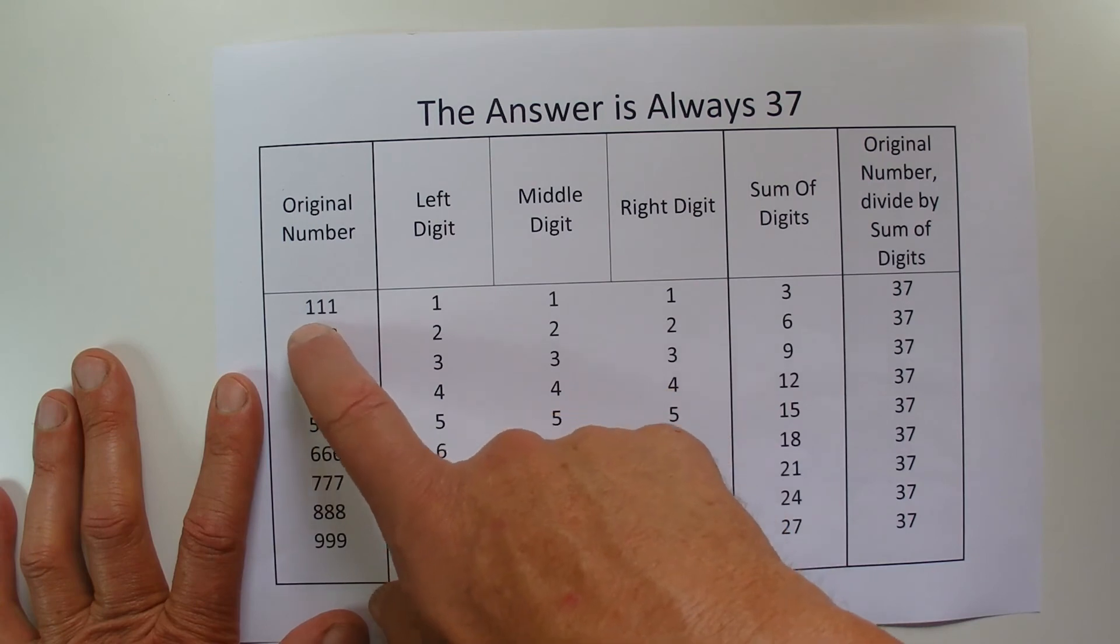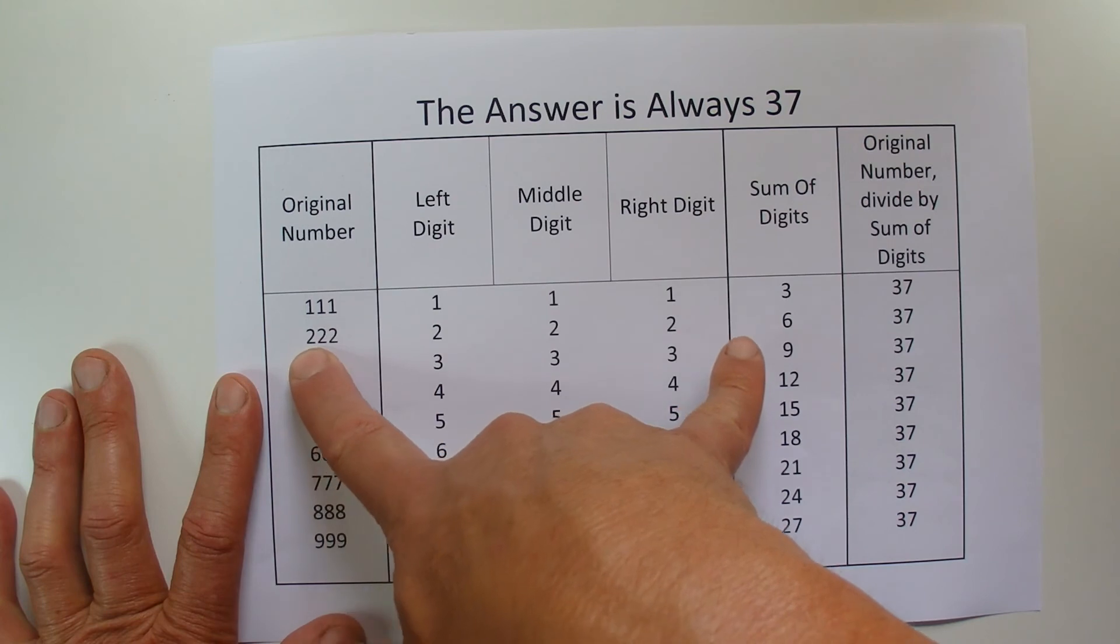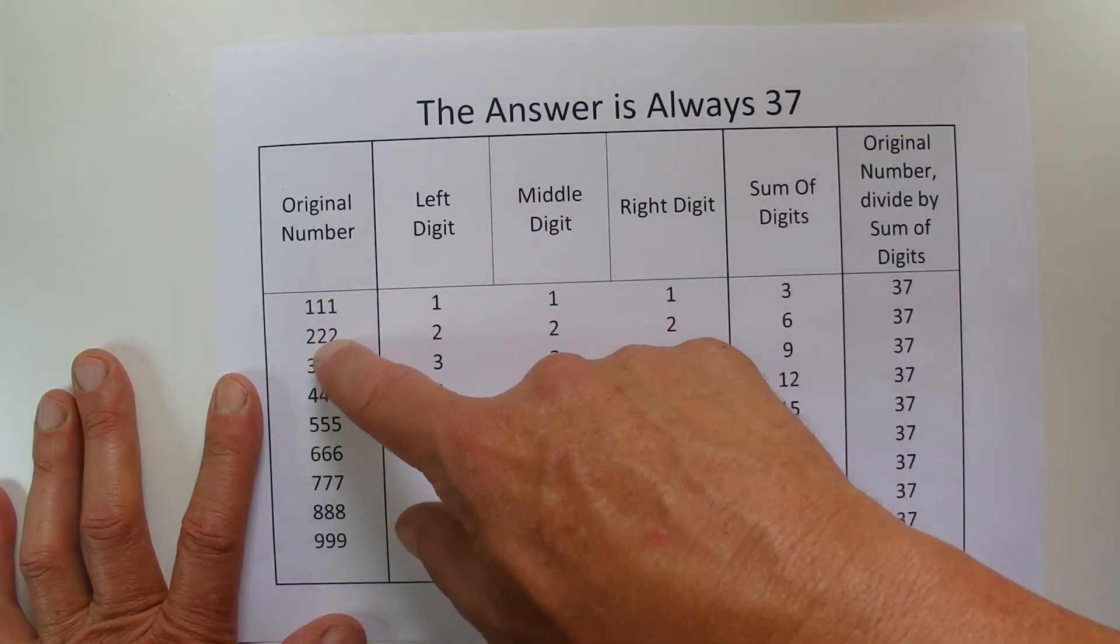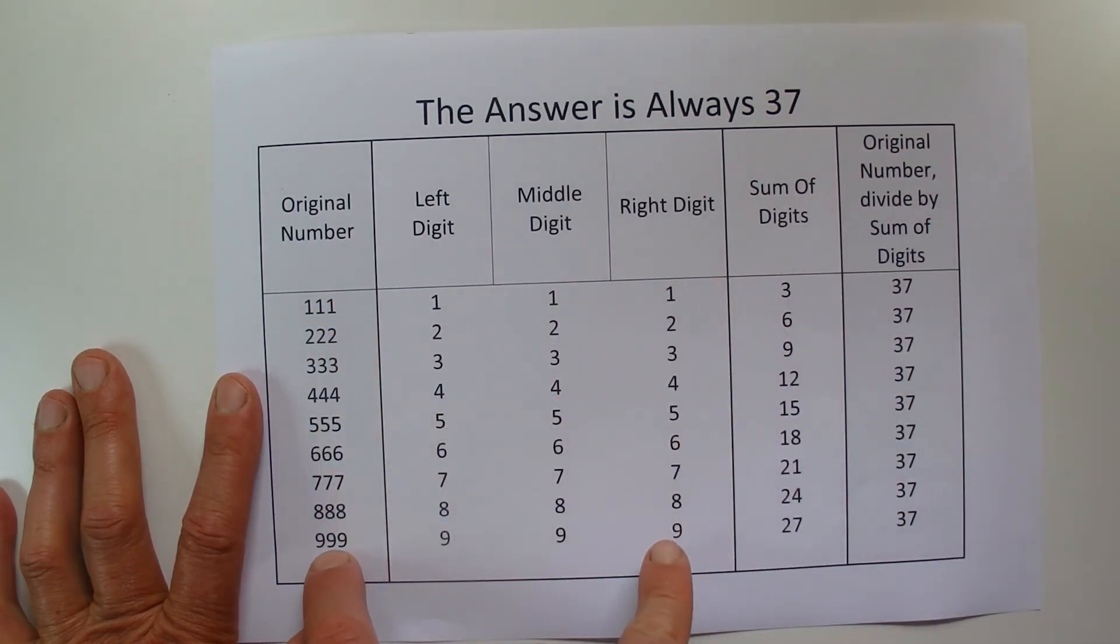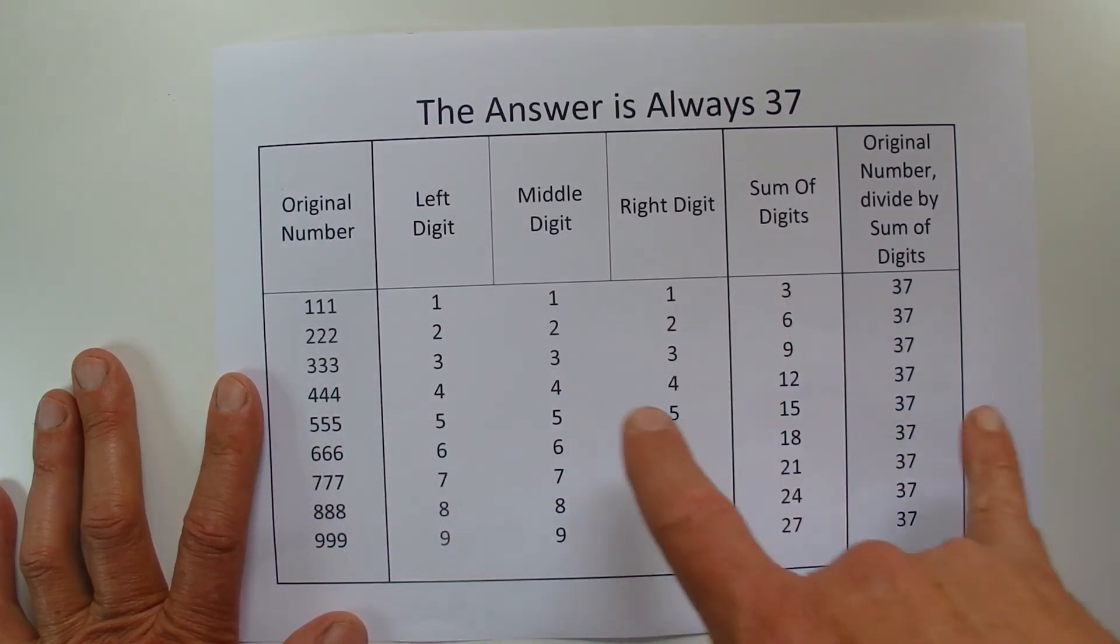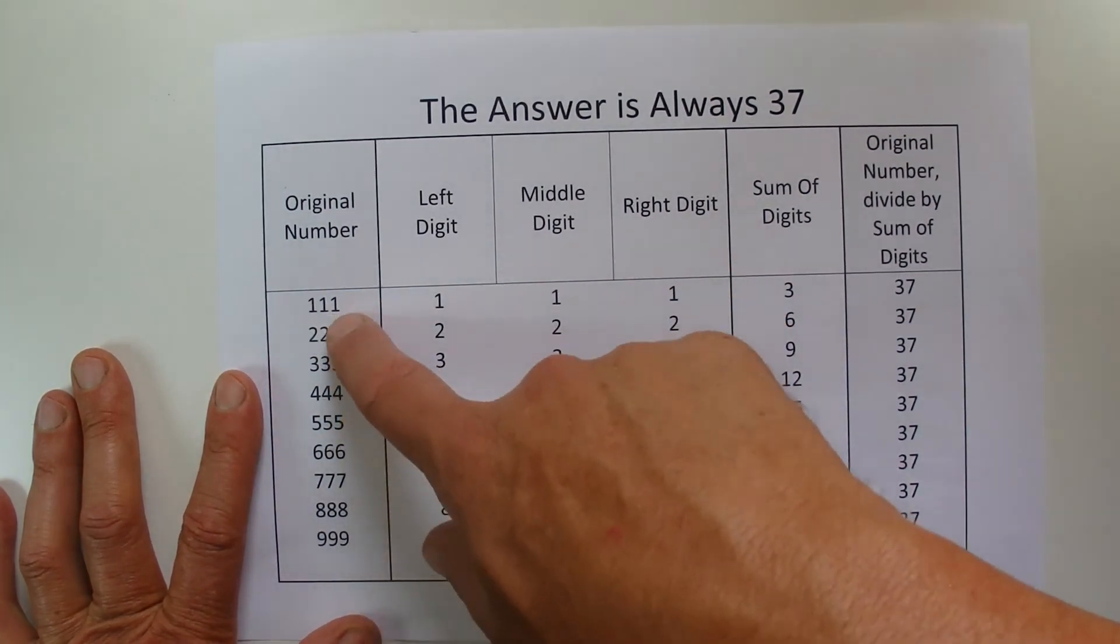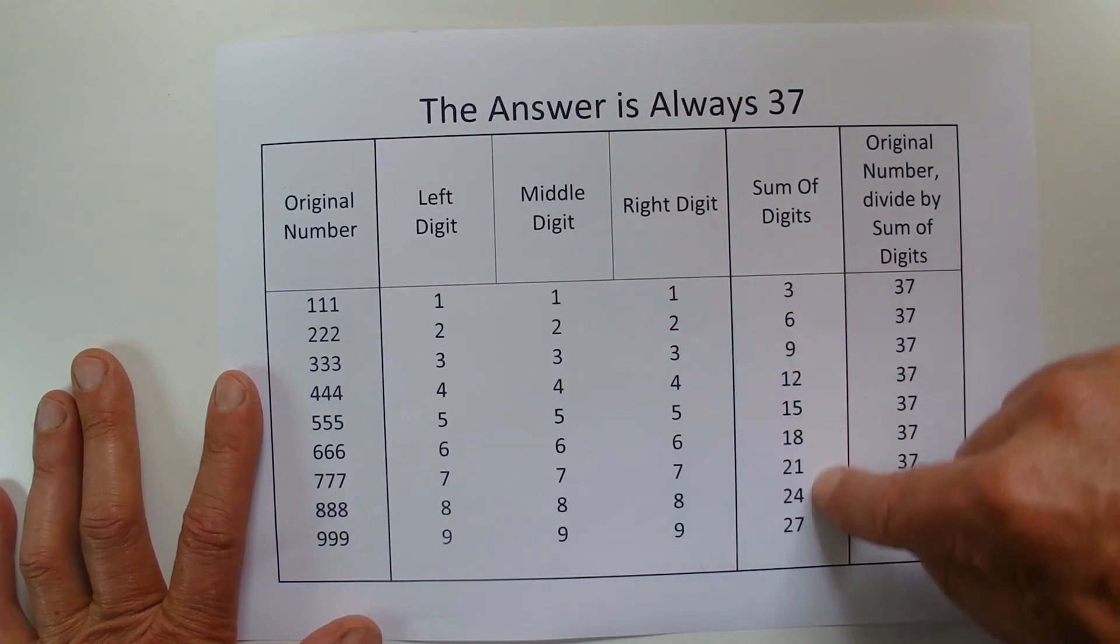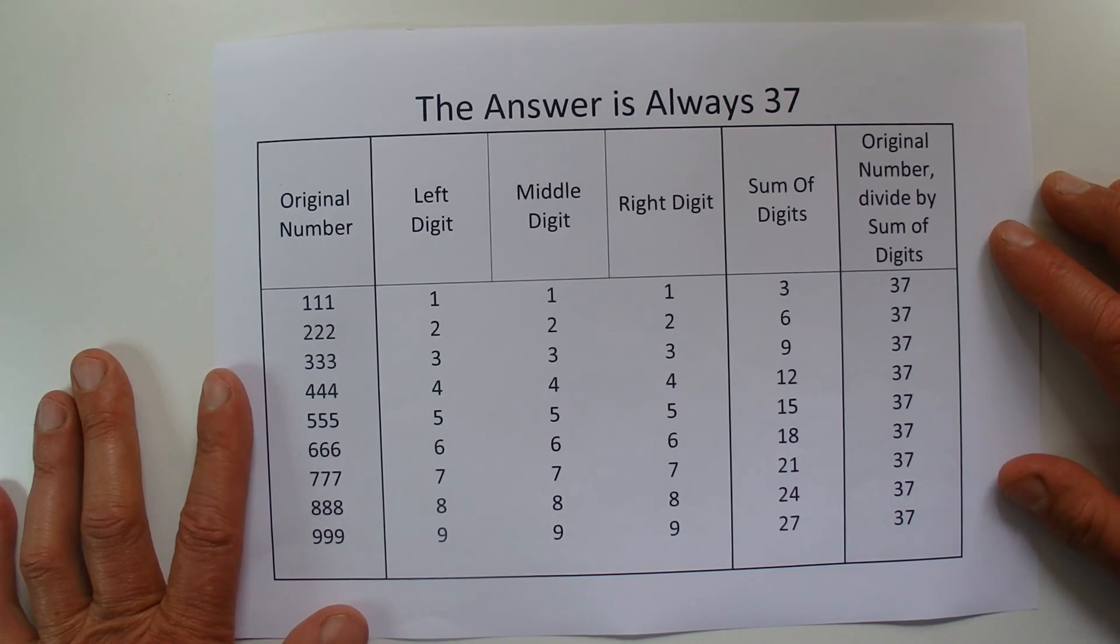So we're going back to our original three-digit number. 111 is to 3, as 222 is to 6. So that's increased by 2, by times 2, and 3 times 2 is 6. And also when you get to 999, 111 times 9 is 999, 3 times 9 is 27. So because the original number is increasing in the same proportion as the sum of the digits, then the answer will always be 37.